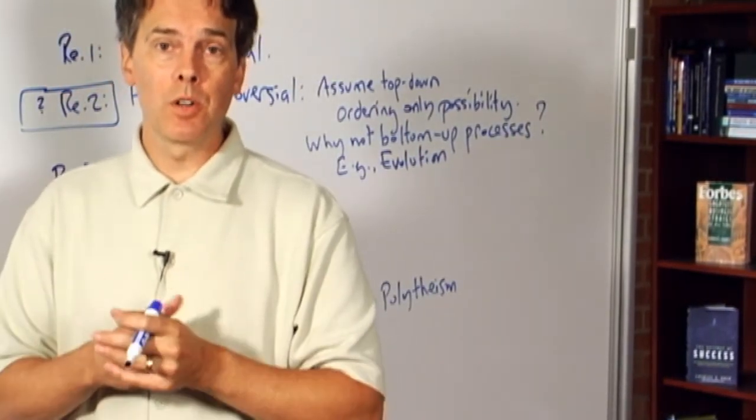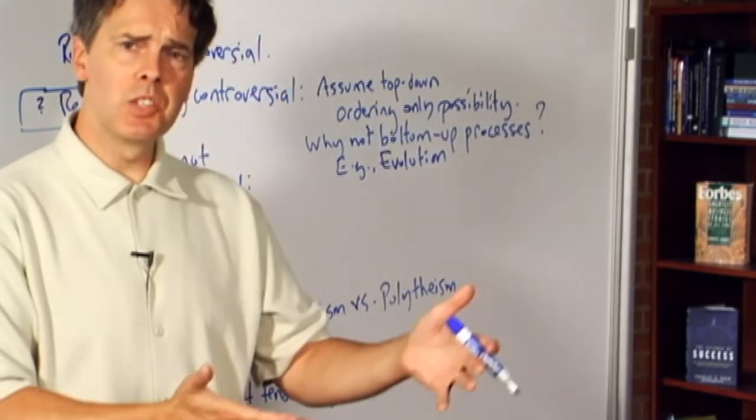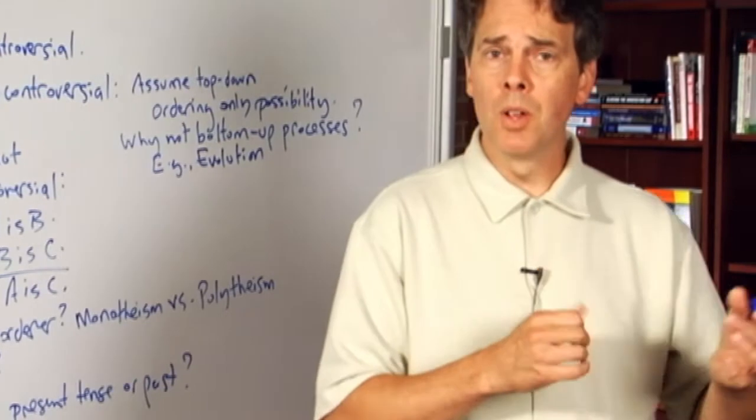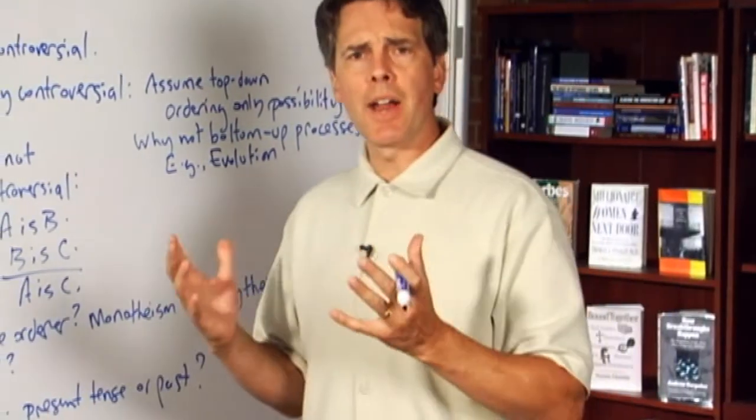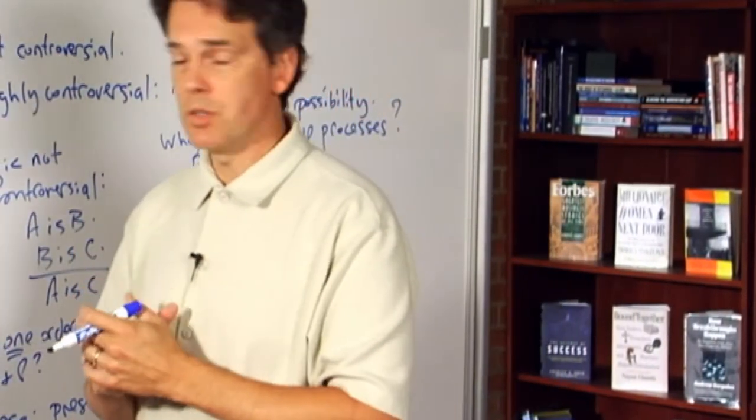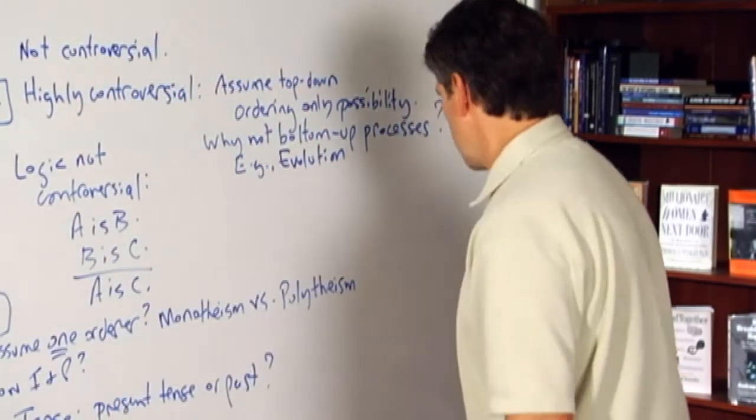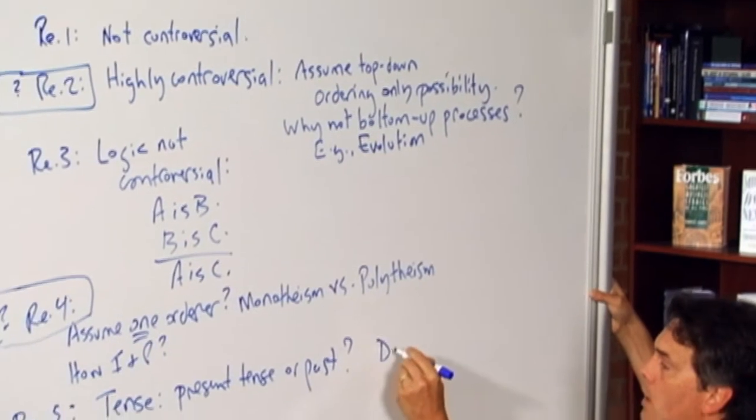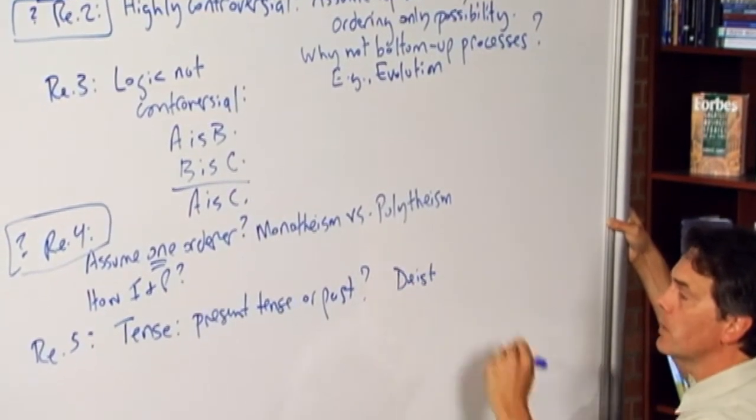does it require that that orderer still exists or is it a possibility that that orderer existed simply say for the purpose of bringing order into the universe but having done so went out of existence his or her or its metaphysical functions performed or has retired or gone on to do various sorts of other things.